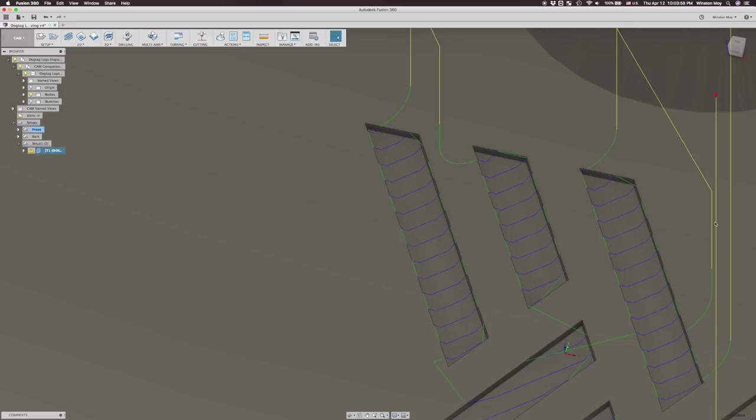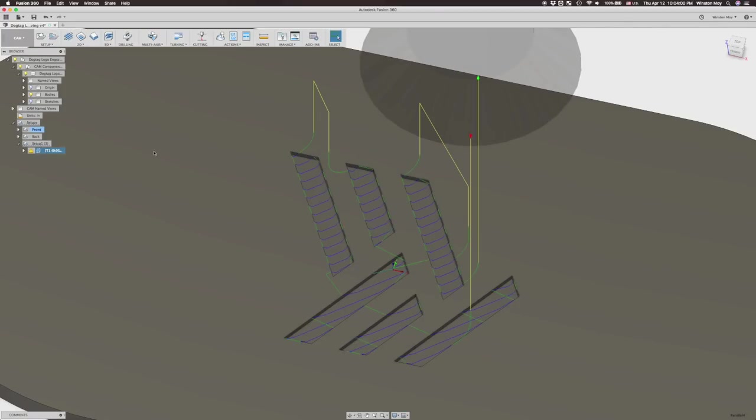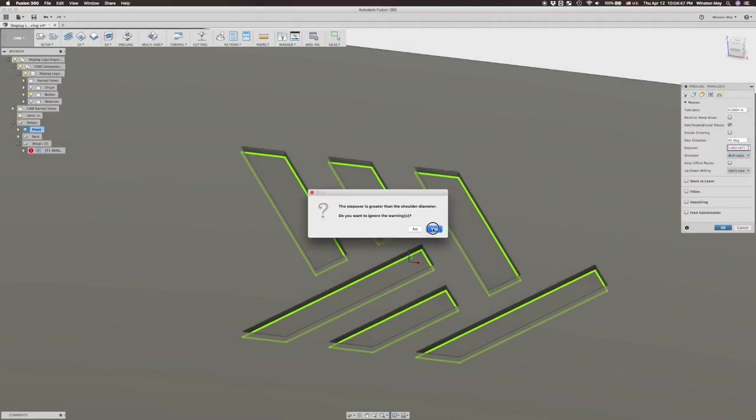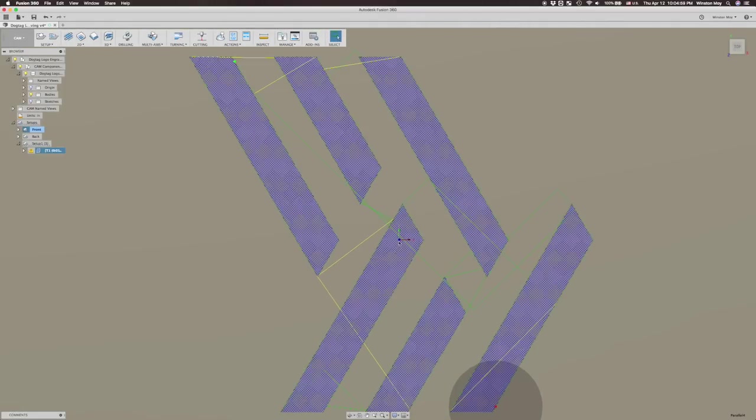However, the pattern here is only in one direction. To make this a crosshatch pattern, you need to add a perpendicular pass. And by adjusting stepover distance, you can control how fine that pattern is.